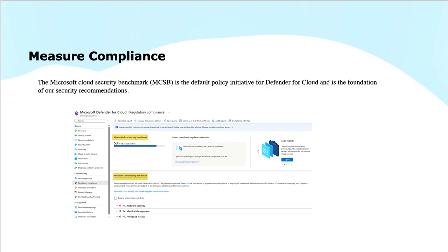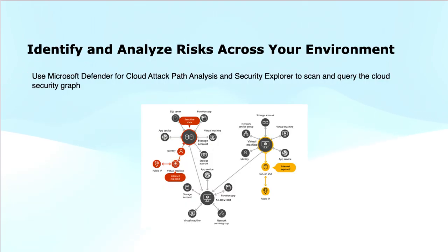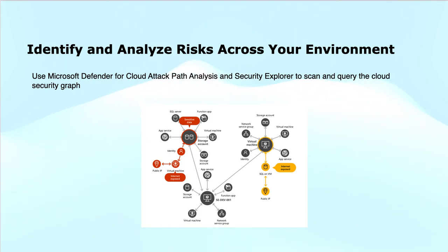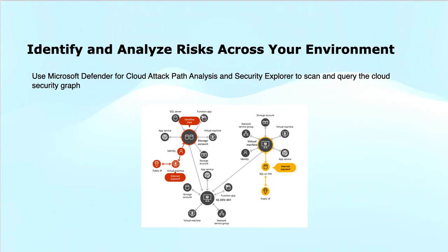For identifying and analyzing risks across your environment, you can use the Microsoft Security Graph, a graph-based context engine within Microsoft Defender for Cloud. The Cloud Security Graph collects data from your multi-cloud environment and other specified data sources — including cloud assets, inventory connections, lateral movement possibilities between resources, internet exposure, permissions, network connections, vulnerabilities, and more.